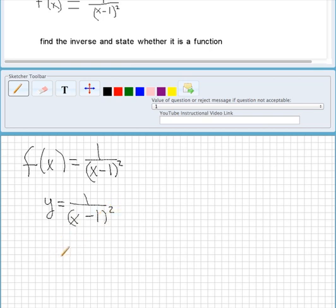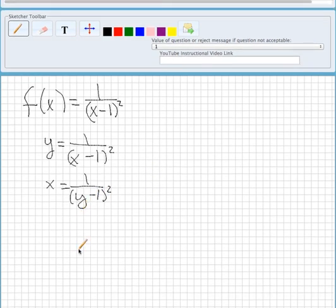And now what we want to do is we want to switch x and y. So it's going to be x equals 1 over y minus 1 squared. And now what we want to do is solve for y.